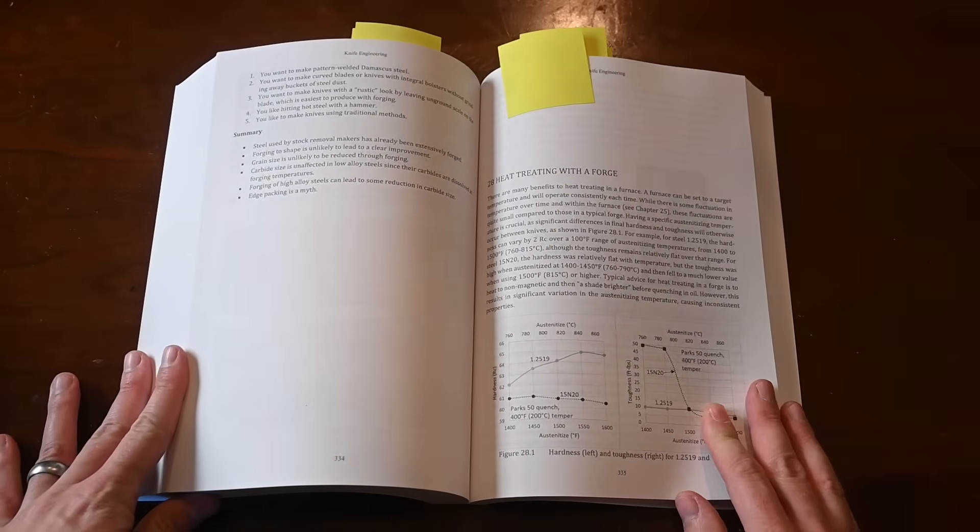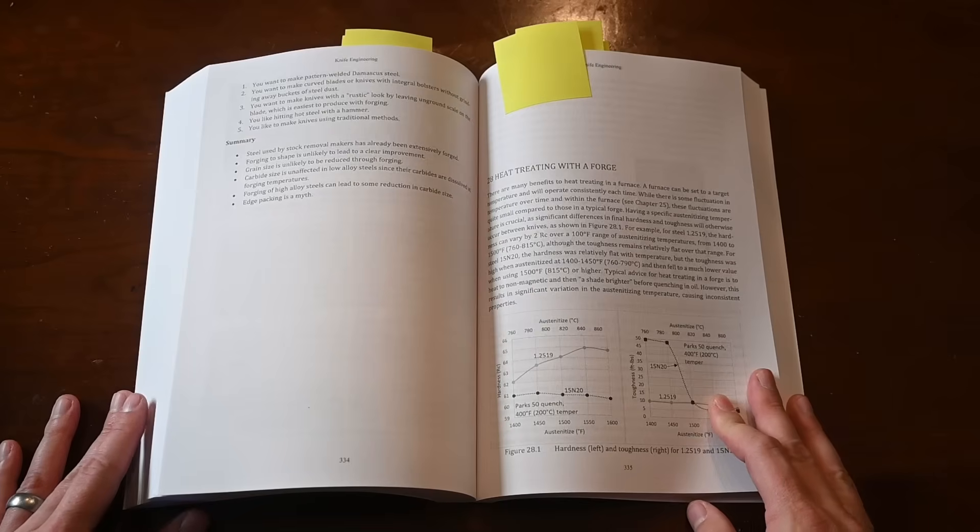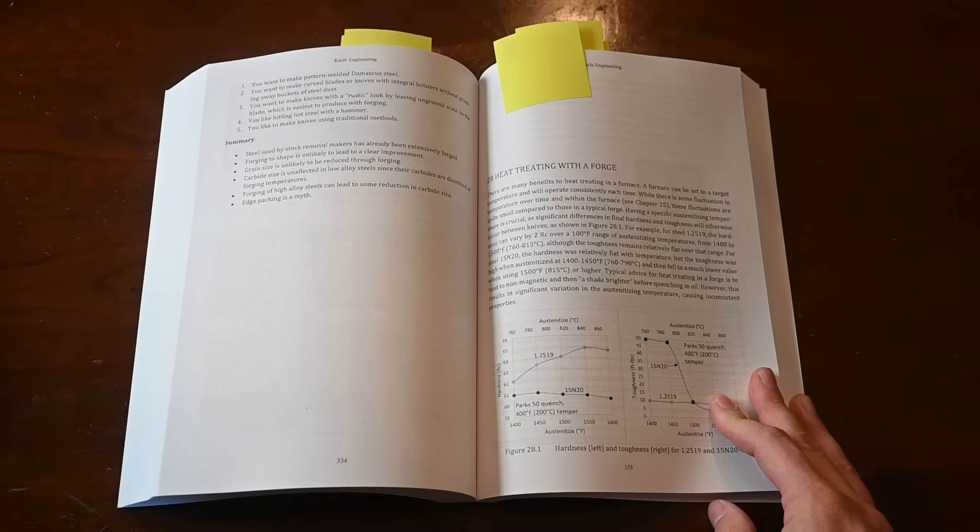One of the biggest changes is that we added a whole new chapter, which is Chapter 28 on forge heat treating. This is a good example of the type of improvement I was trying to make with this book—I did a ton of experiments that looked at things I had not done myself for the first edition.